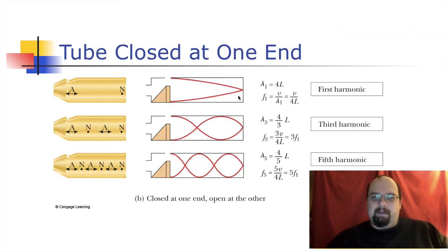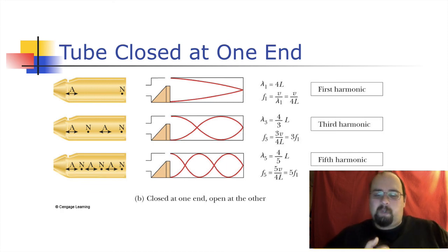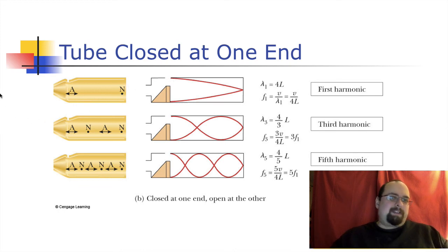Here we close this end — this end is still our open end. So it's an anti-node here and a node here. Notice the smallest you can have: the first case has one node, second has two nodes, third has three nodes. But remember, you don't put N equals one, two, three — N doesn't stand for nodes. So N here is one, three, five. The actual wavelength that fits in there: the wavelength is four times the length of the pipe, because it's only gone halfway up — it would come back down and do the reverse. One quarter wavelength fits in the pipe length.